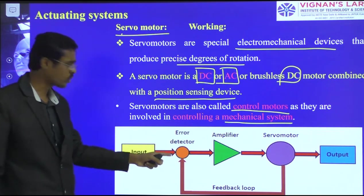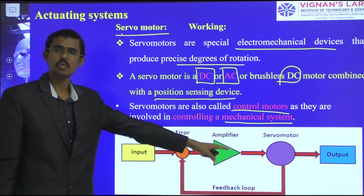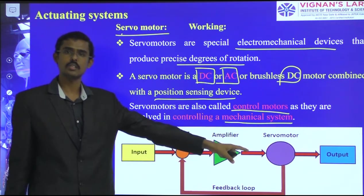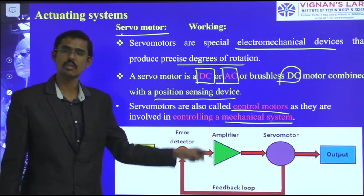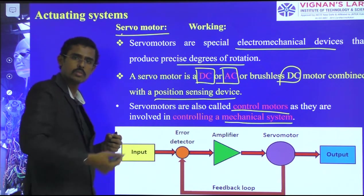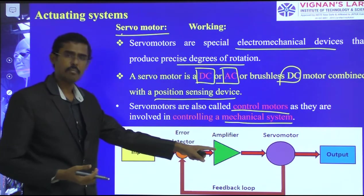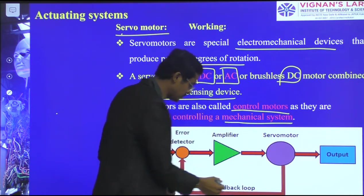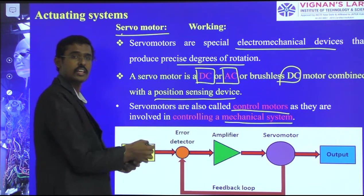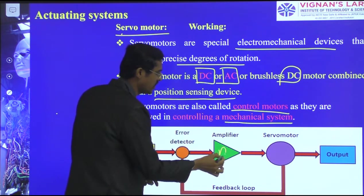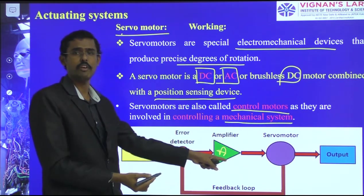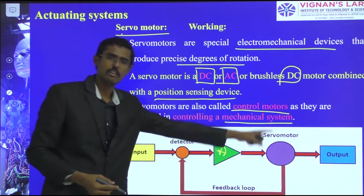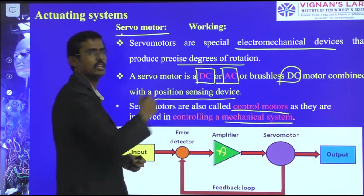The servo motor operates as a closed-loop system. Whether it is a DC or AC motor, I take the feedback from the output and give it to an error detector. The figure shows the closed loop: the input required — say 100 RPM — is given to an amplifier which drives the servo motor. If only 90 RPM is achieved, the feedback from the closed loop indicates a 10 RPM lag, and more current is amplified to correct it, making output equal to the required input.